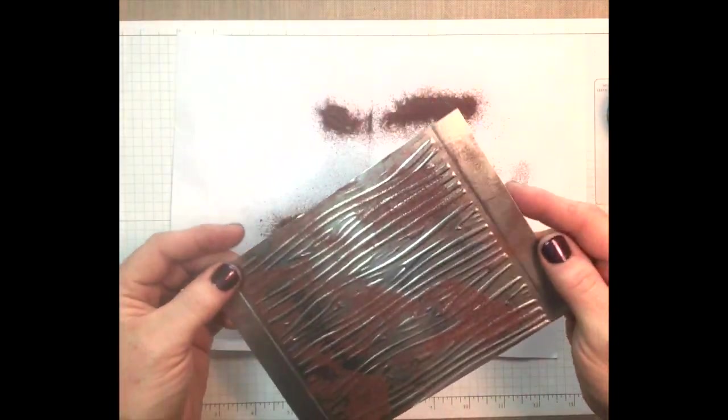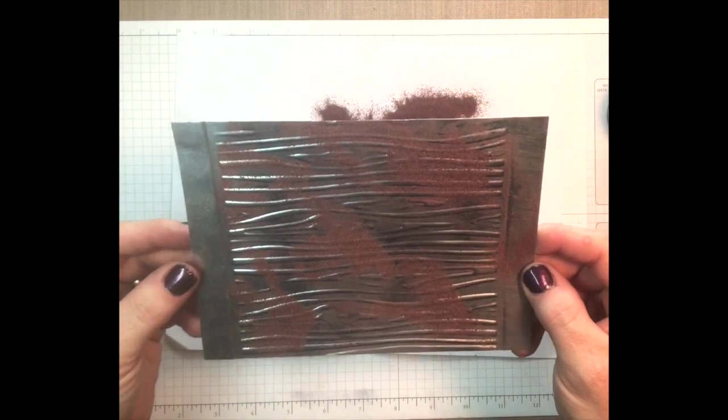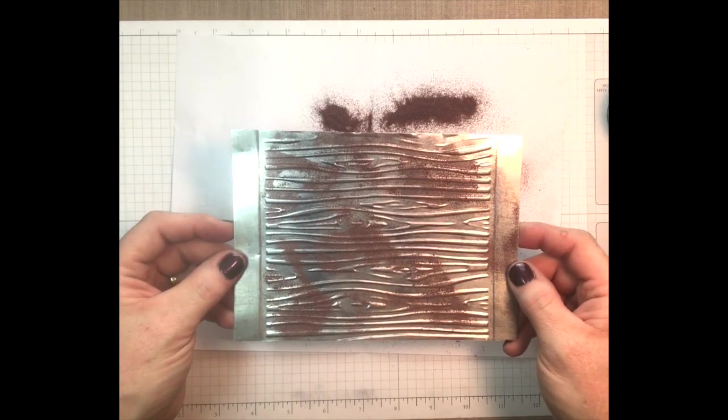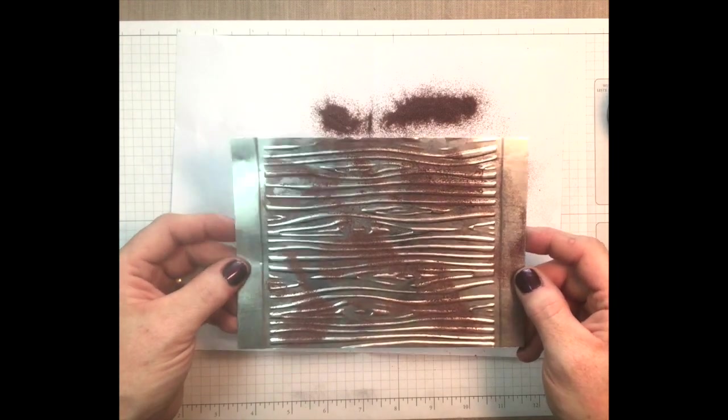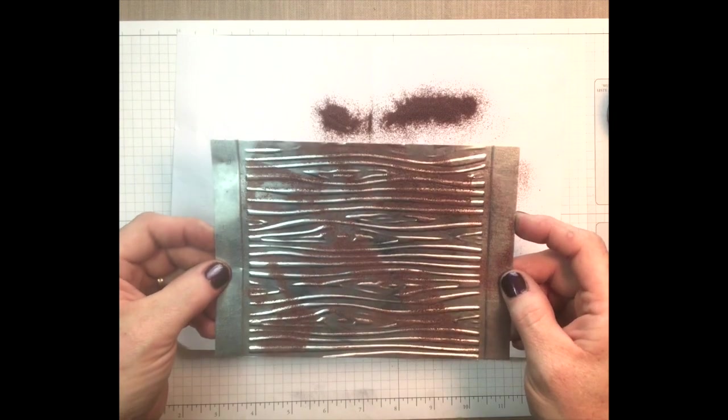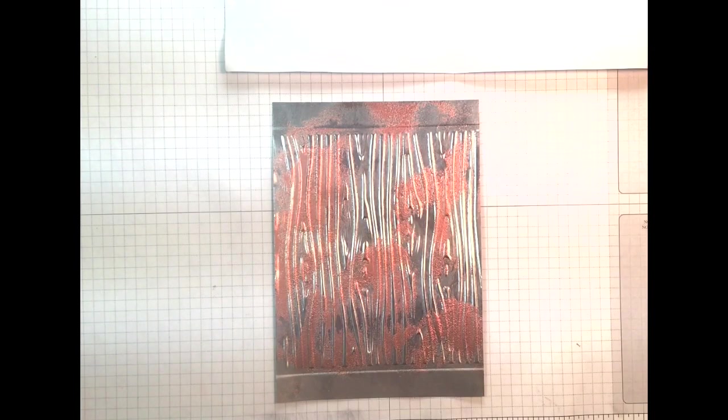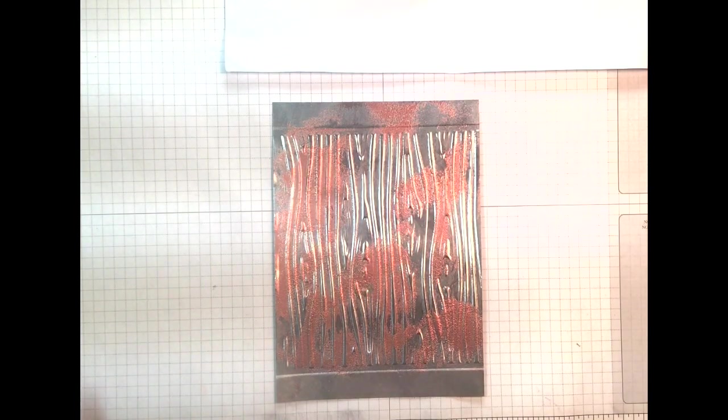One tip: this is metal, it gets very hot when you use your heat tool. The whole thing will get hot. So make sure you put this on a heat-resistant surface and go ahead and heat set your embossing powder. And then let it cool before you try to pick it up. Now we have our copper embossed.